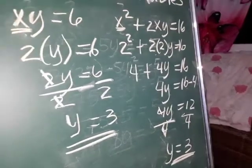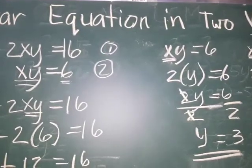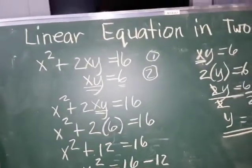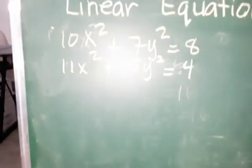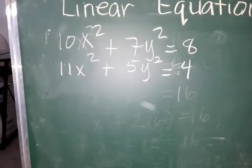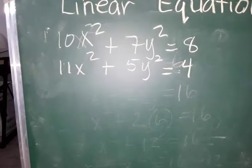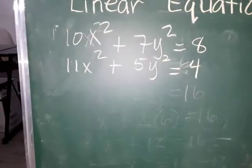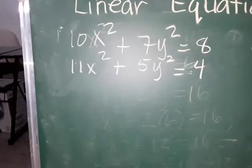That's how we compute linear equations in two variables. I'm going to give you one more example. We have 10x squared plus 7y squared is equal to 8, and 11x squared plus 5y squared is equal to 4. I think there's no common factor for our variables, so we need to multiply both equations. Let's eliminate y.